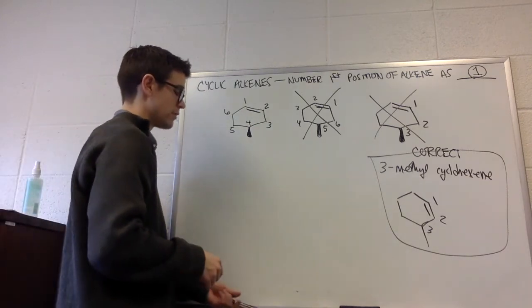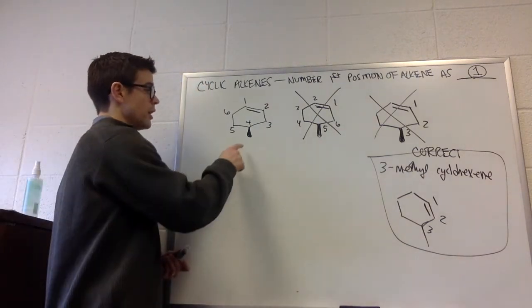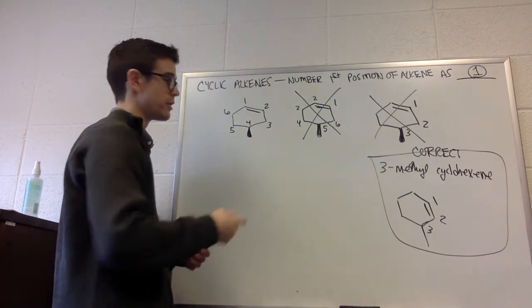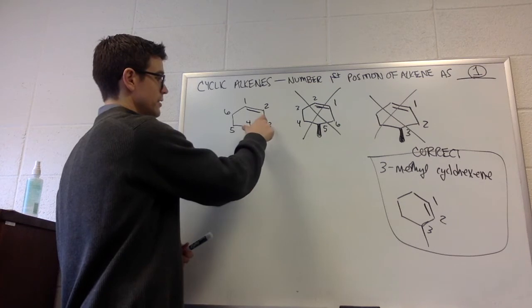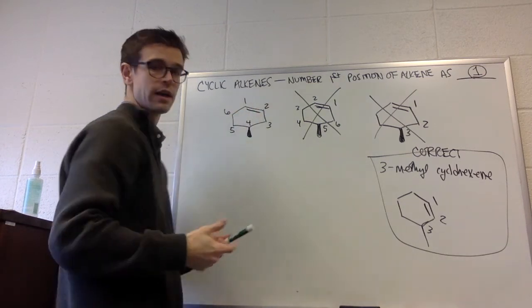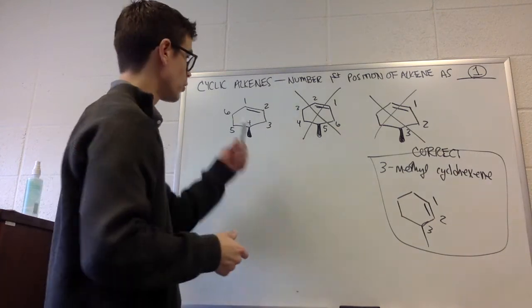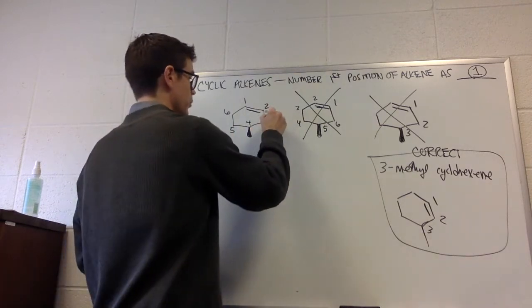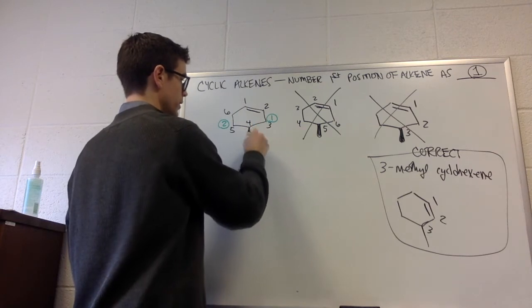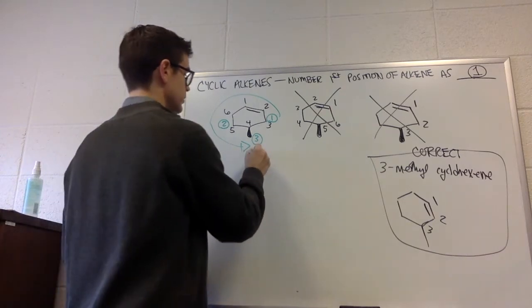So the only other thing that we have to do is determine R and S around the ring. So is this a stereocenter? Well, we have a methyl group and an H—those are two different things. We have a CH2 that's the same as this CH2. We have a CH2 that is different than this CH, and alkenes get priority over alkanes. So this is going to be priority one, priority two, and priority three. So we're going counterclockwise, so this is going to be S.